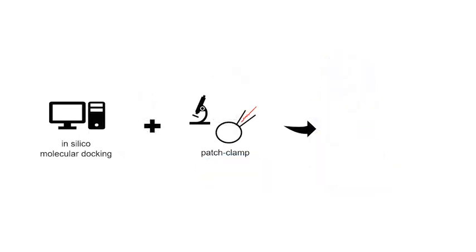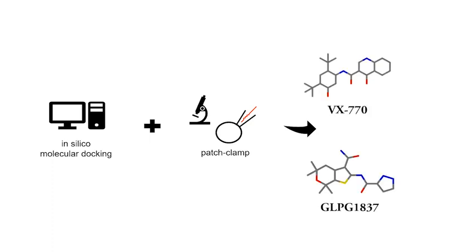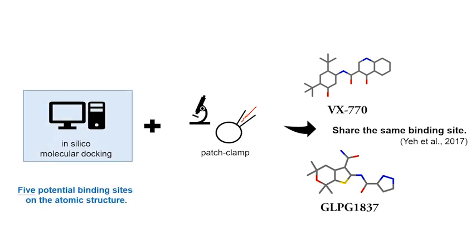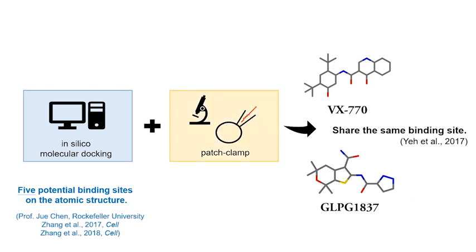We first combined molecular docking and patch clamp techniques to identify the binding sites for VX470 and another CFTR potentiator, GLPG1837, which in our previous report has been shown to share the same binding site with VX470. Molecular docking identified five potential binding sites on the atomic structure of CFTR, solved by Professor Zhu Chien's lab at the Rockefeller University. We then introduced mutations at each site and tested if the mutations alter the apparent affinity of GLPG1837 calculated through simple dose-response relationships.